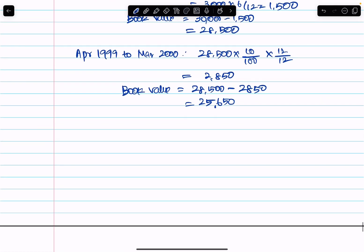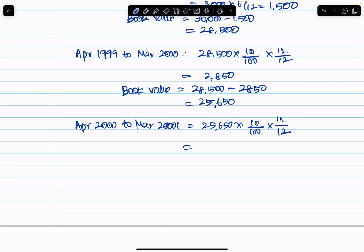For the third financial year, April 2000 to March 2001, depreciation equals $25,650 into 10% into 12 by 12, which equals $2,565.